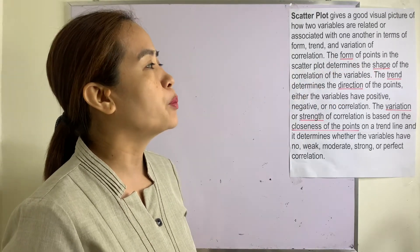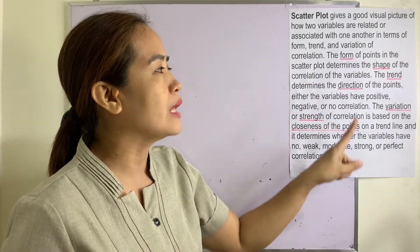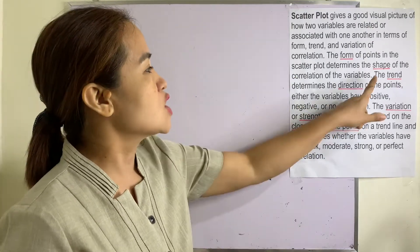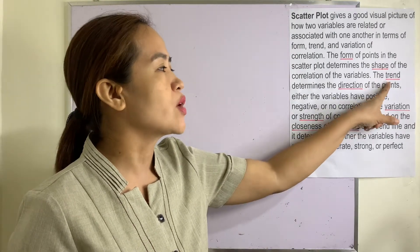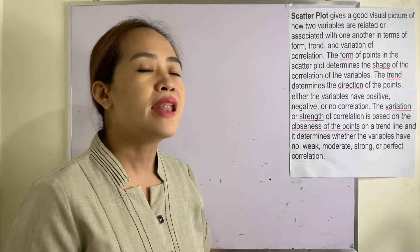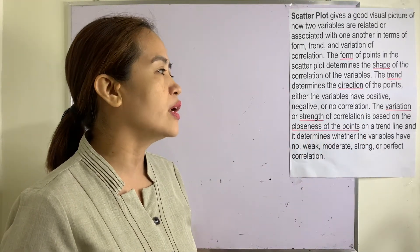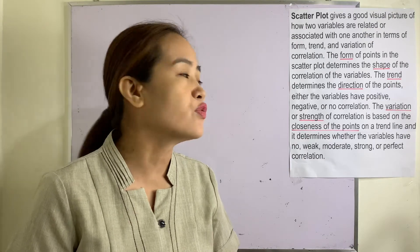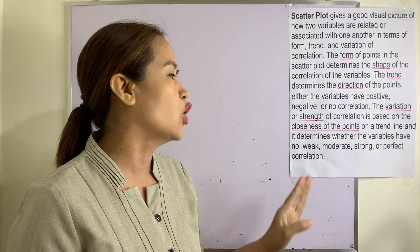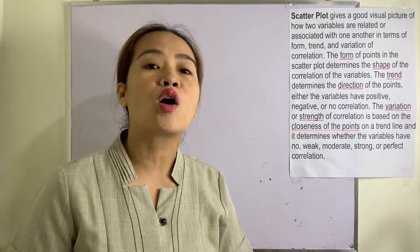The form of points in the scatter plot determines the shape of the correlation of the variables. The trend determines the direction — whether the variables have positive, negative, or no correlation. The variation or strength of correlation is based on the closeness of the points on the trend line, and it determines whether the variables have no, weak, moderate, strong, or perfect correlation.